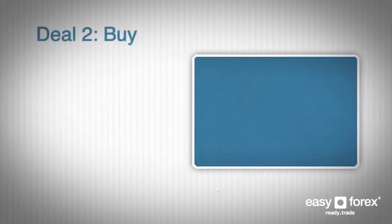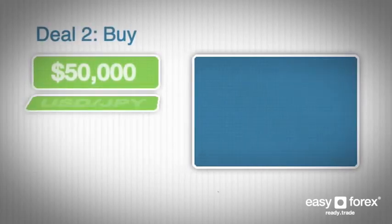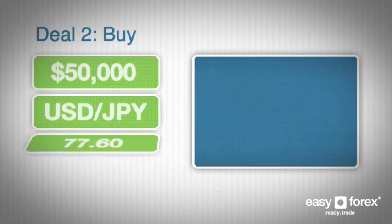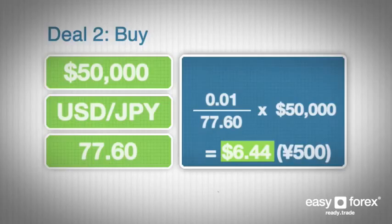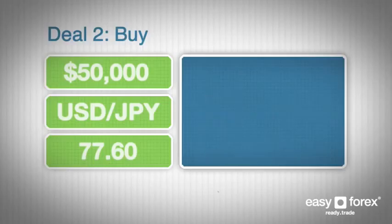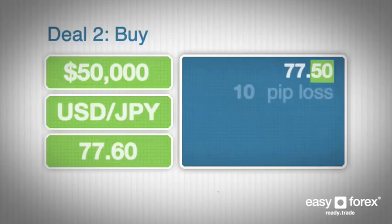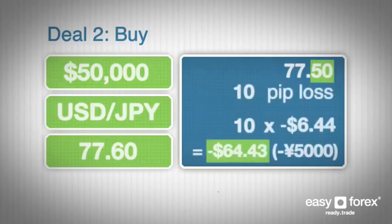Deal 2: Buy $50,000 worth of US dollars-Japanese yen at 77.60. PIP value in dollar terms is 0.01 divided by 77.60, times 50,000, equals $6.44 or exactly 500 yen. If the deal is closed at 77.50 with a 10 PIP loss, the total loss will be $64.43 or 5,000 Japanese yen.